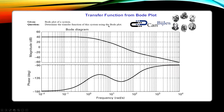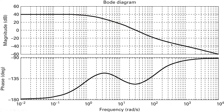Let me zoom in on this region and make a full screen of that. What do we recognize? We have a DC gain, so at very low frequencies we see that our gain is approximately 40 dB, or very close to 40 dB. We will say that this DC gain is 40 dB and we will of course convert this to a scalar value.